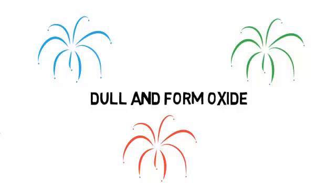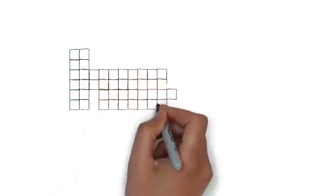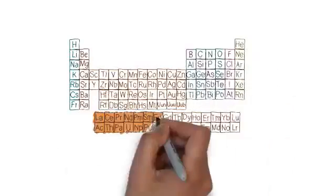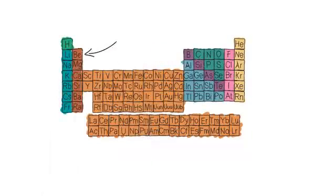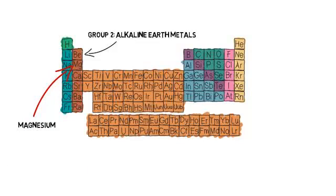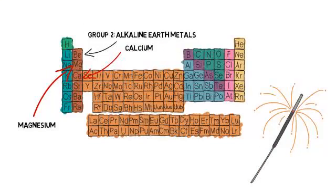If you burn these elements they form specific colors that can be used in fireworks. The colors range from brick red, crimson, to blue depending on which element you burn. Group 2, the alkaline earth metals, are very similar to group 1 alkali, however they occur more naturally such as magnesium and calcium. They can also be used in things like fireworks because when you burn them they all have specific flame colors.